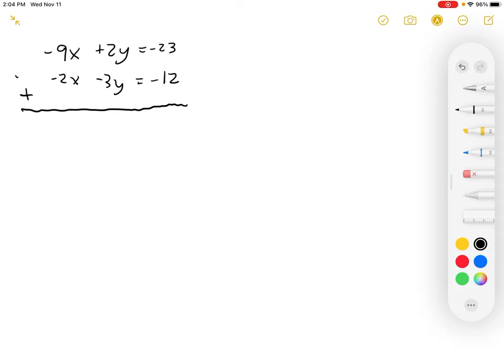So sometimes with elimination, you get a system of equations, and not only do the terms not add to zero when you add them together, like in this case, there isn't an obvious number to multiply each one by.